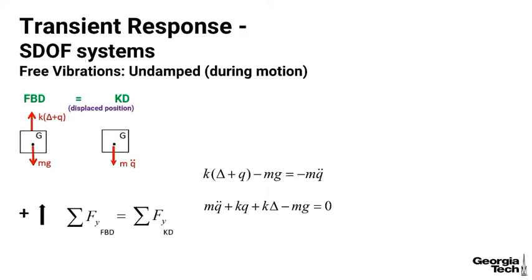I just rearranged the terms here, and you can see if you go back to our analysis of static equilibrium that k delta equals mg.